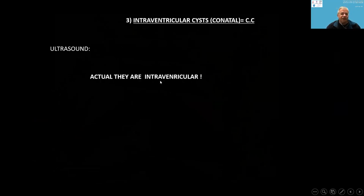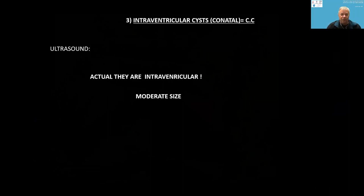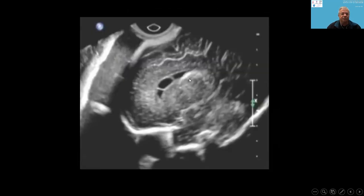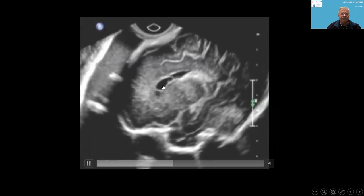The third group is intraventricular cysts — I call them conatal cysts. On ultrasound, they are actually intraventricular, not periventricular. They appear like small grapes in the anterior horn, in the third trimester. Here they are shown on MRI and ultrasound.